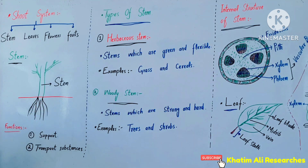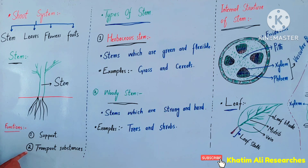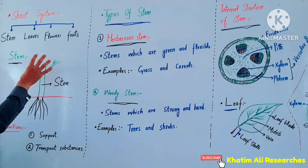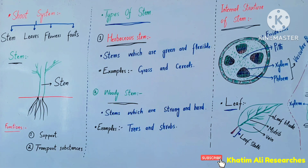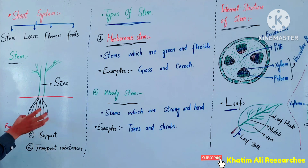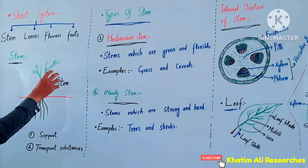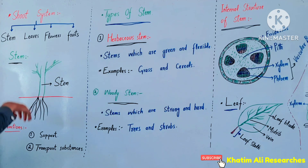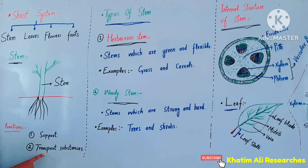The stem — what are the functions of a stem? First: support. Second: transport of substances, such as water and nutrients. The stem transports substances throughout the plant, carrying water and food. The stem's key function is transport.